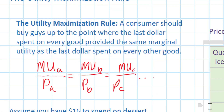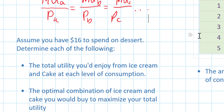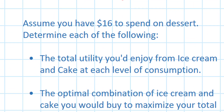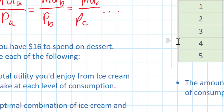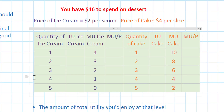So here's a typical problem that would require you to use some of the calculations and skills we're talking about in this lesson. We've got a situation where you have sixteen dollars to spend on dessert. You know that ice cream provides you with a certain amount of marginal utility per scoop, and that cake provides you with a certain amount of marginal utility per slice.